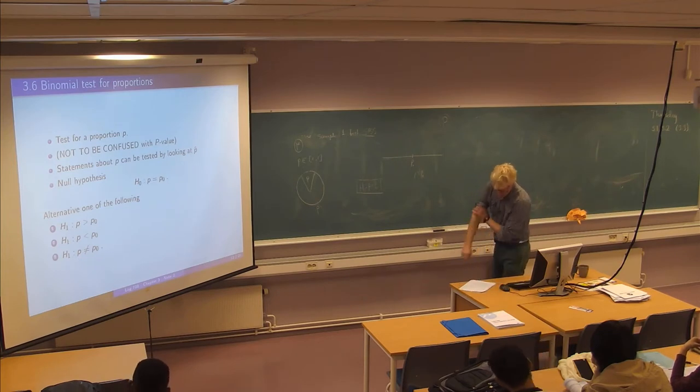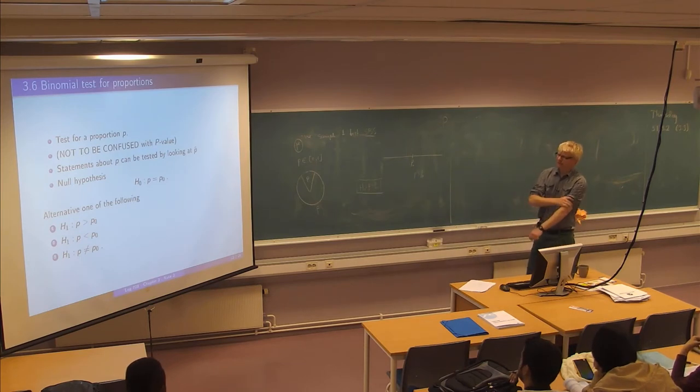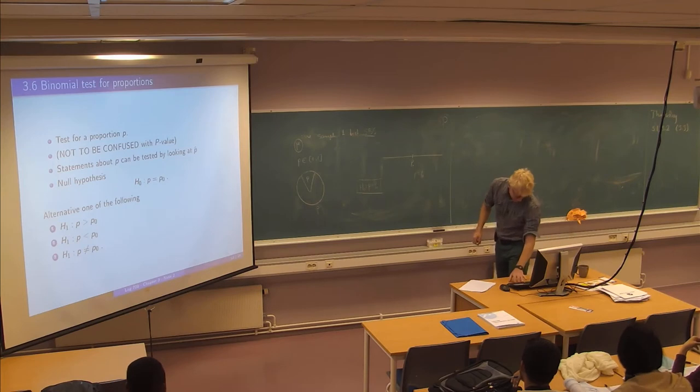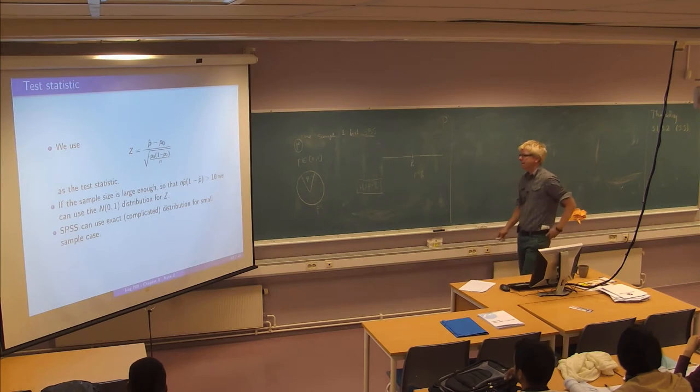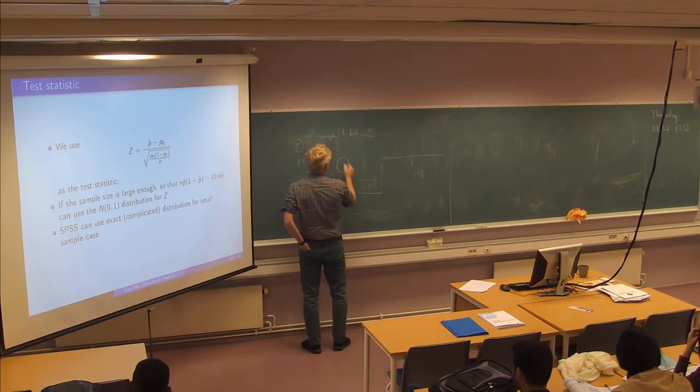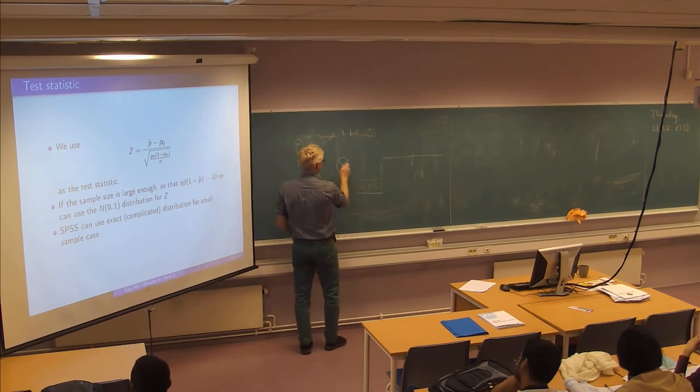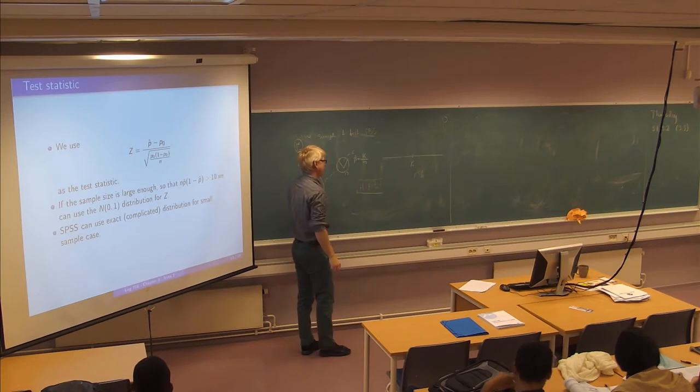So I'm not going to spend much time on deriving distributions and so on for this one. It's done in any basic statistics course. So we're going to use as a test statistic. We will of course observe from a sample here. So you take N. And then you observe how many have this property that you're looking for. So it's K. And K over N is what we call P hat. So this is the estimate for P of course.